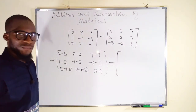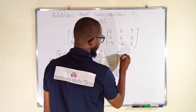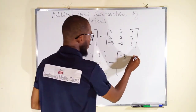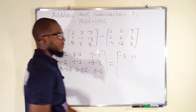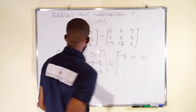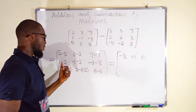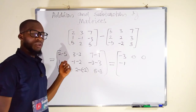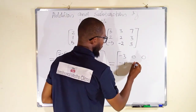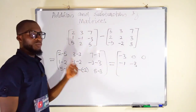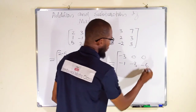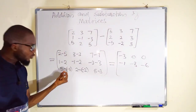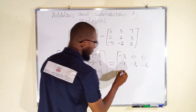Let us simplify to obtain our final result. Two minus five is negative three. Three minus three is zero. Seven minus seven is also zero. One minus two is negative one. Negative one minus two is minus three. Negative three minus three is minus six. Minus minus is plus, so five plus five is ten.